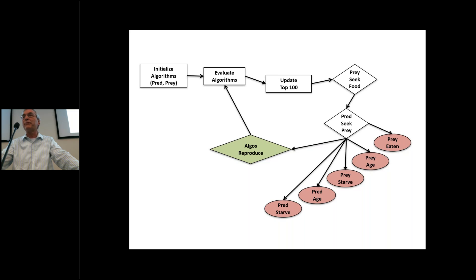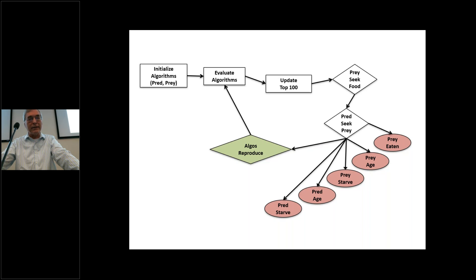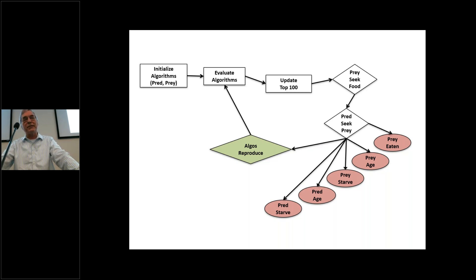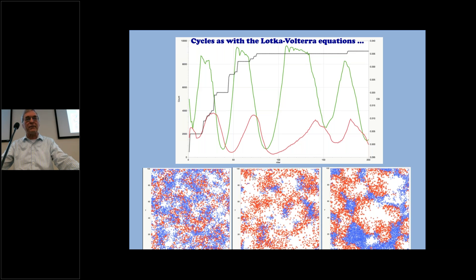To do this in a post-processor environment you have to spell out exactly what this process looks like. The flow diagram shows: you initialize the predator and prey algorithms, evaluate them, and keep a top-100 list of the best performers so it doesn't matter when you stop — you always have the best performers available. The prey seek food, the predators seek the prey, some bad things happen, and the ones that survive produce the next generation. The survivors are the better-performing algorithms, so you keep getting increasingly better-performing algorithms.